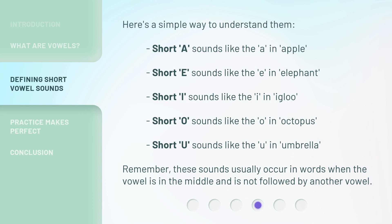Here's a simple way to understand them. Short A sounds like the A in apple. Short E sounds like the E in elephant. Short I sounds like the I in igloo. Short O sounds like the O in octopus. Short U sounds like the U in umbrella. Remember, these sounds usually occur in words when the vowel is in the middle and is not followed by another vowel.